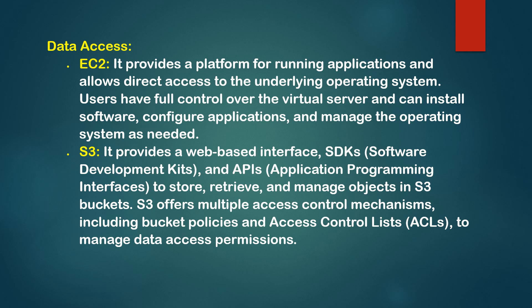Data Access — EC2: EC2 provides a platform for running applications and allows access to the underlying operating system. Users have full control over the virtual servers and can install software, configure applications, and manage the operating system as needed. S3: S3 provides a web-based interface, SDK (Software Development Kit), and APIs (Application Programming Interfaces) to store, retrieve, and manage objects in S3 buckets. S3 offers multiple access control mechanisms including bucket policies and access control lists (ACLs) to manage data access permissions.